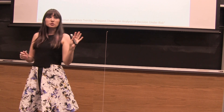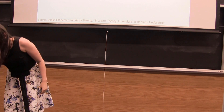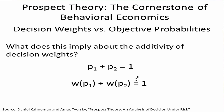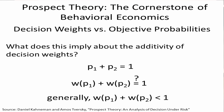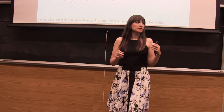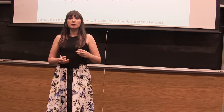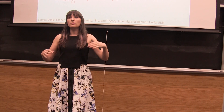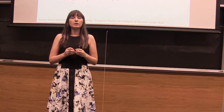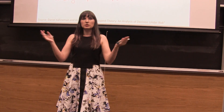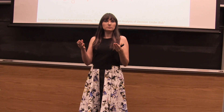Usually, unless we're dealing with a very specific set of probabilities, these decision weights are going to add to something less than one. We refer to that as the sub-additivity of decision weights. So that's important to keep in mind — things will make more sense later if you remember that we're taking away this assumption that these guys are going to add to one.